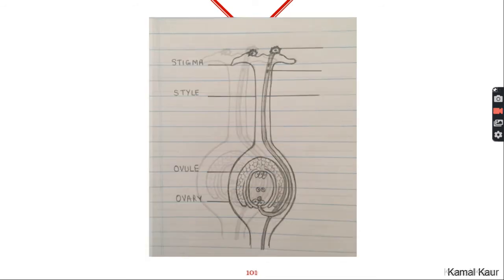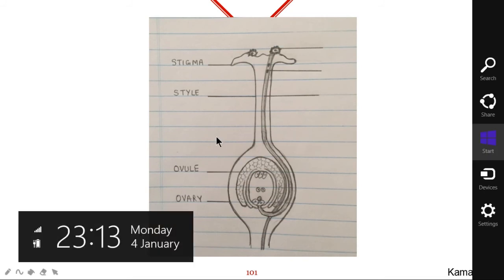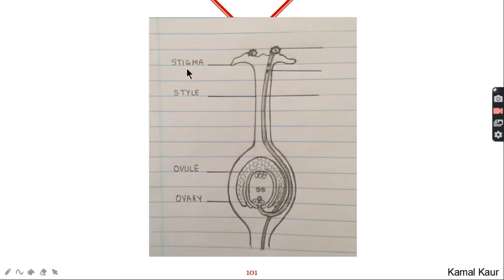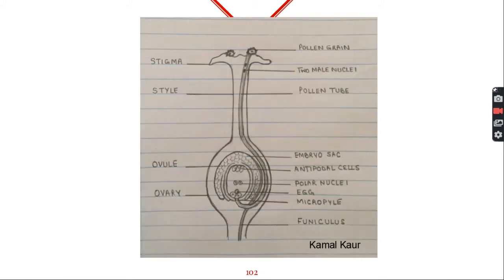We will start with the labeling part now. On the left side we will label the three parts of the carpel that is stigma, style, ovary and ovule. On the right side we will label the rest of the parts.